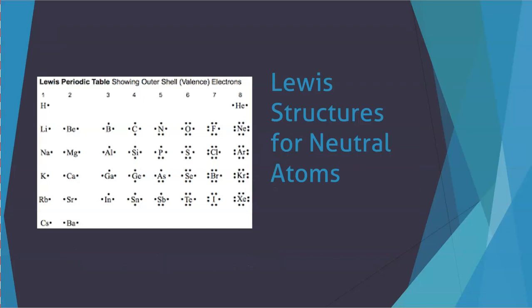To draw the Lewis structure for a neutral atom we're just going to put the atomic symbol and we're going to surround that by dots. Each dot represents a separate valence electron.